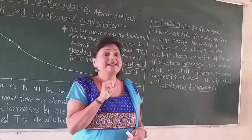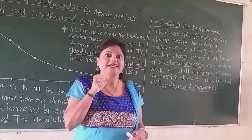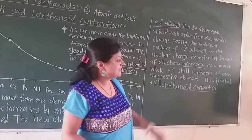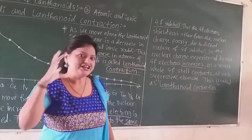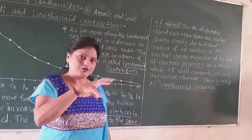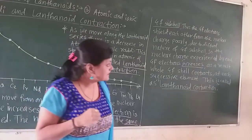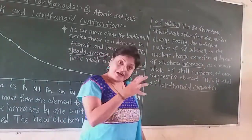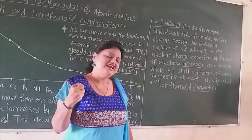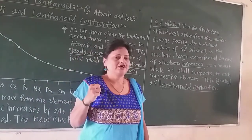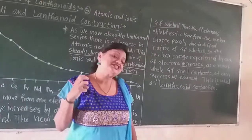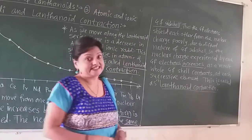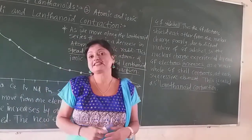The nucleus therefore attracts the f-orbital closer and closer to itself, causing the size to decrease. Due to the diffuse nature of the f-subshell, the nuclear charge experienced by each f-electron increases. The nucleus attracts the f-orbital more and more closely. As a result, the whole f-shell contracts due to the increase in effective nuclear charge experienced by those f-electrons. There is contraction in the f-orbital — the entire f-subshell contracts at each successive element. This is called the lanthanoid contraction.